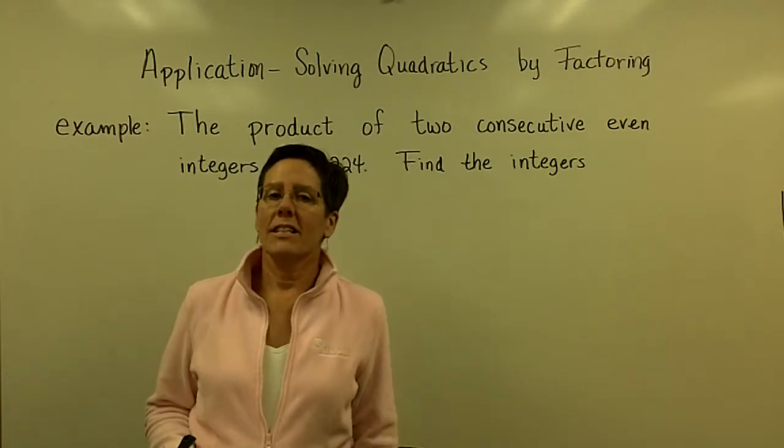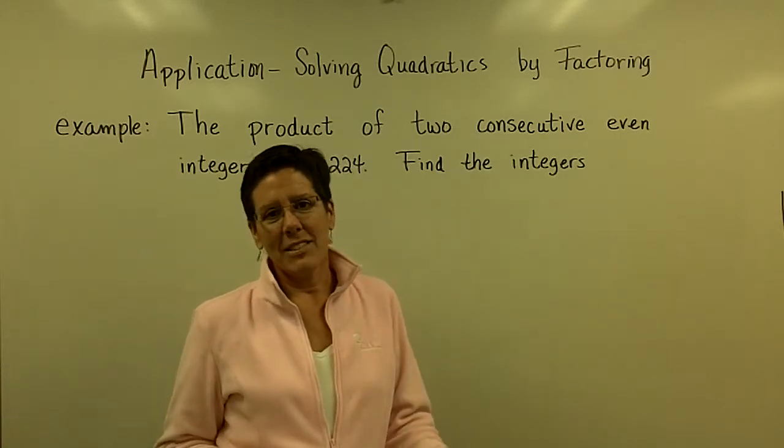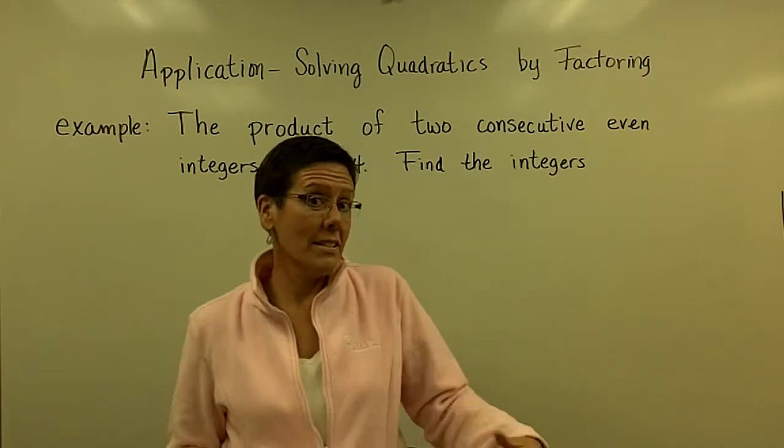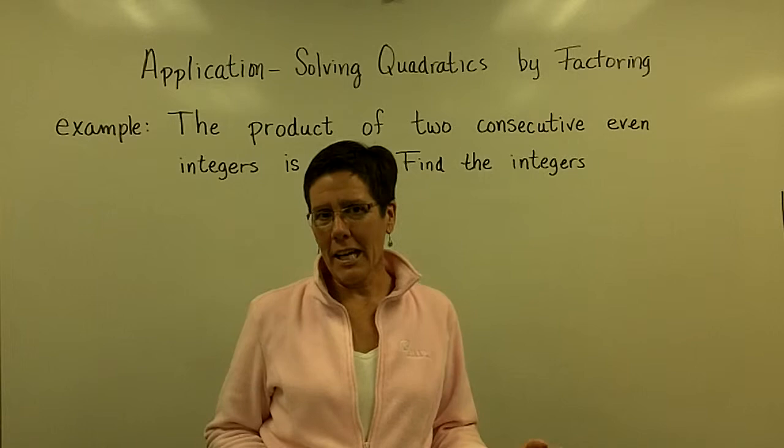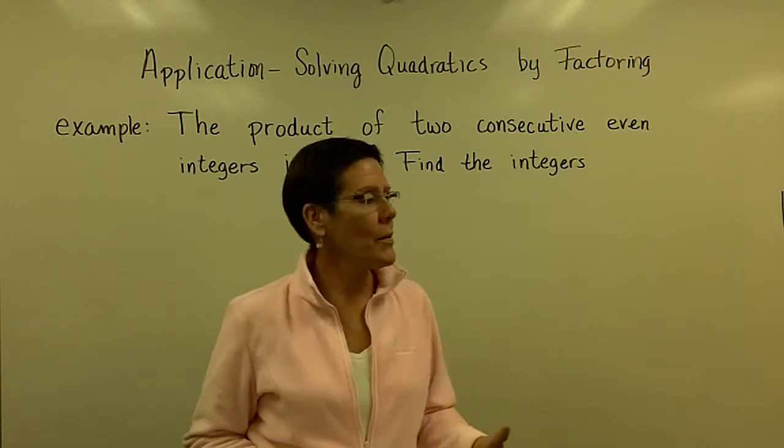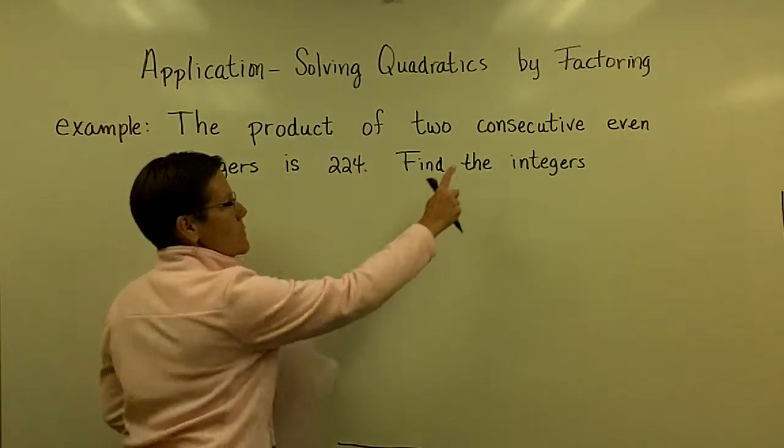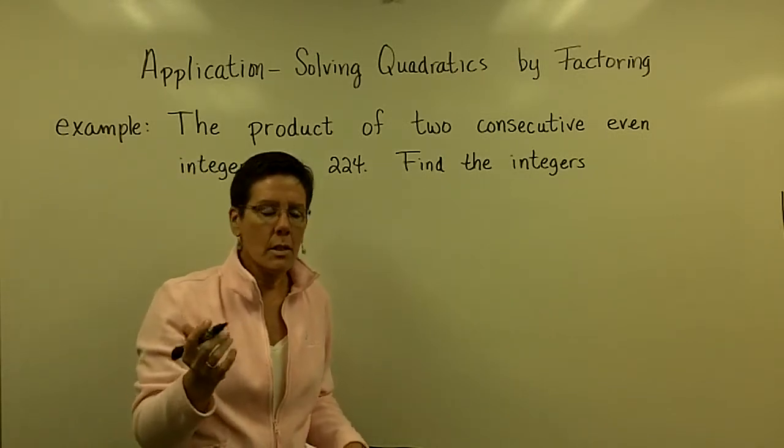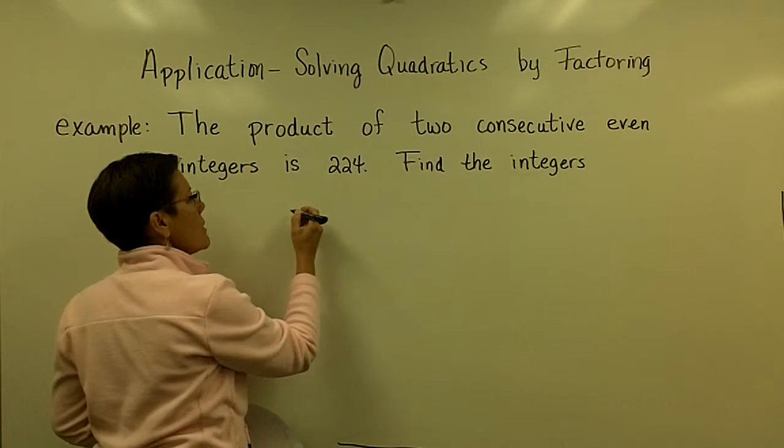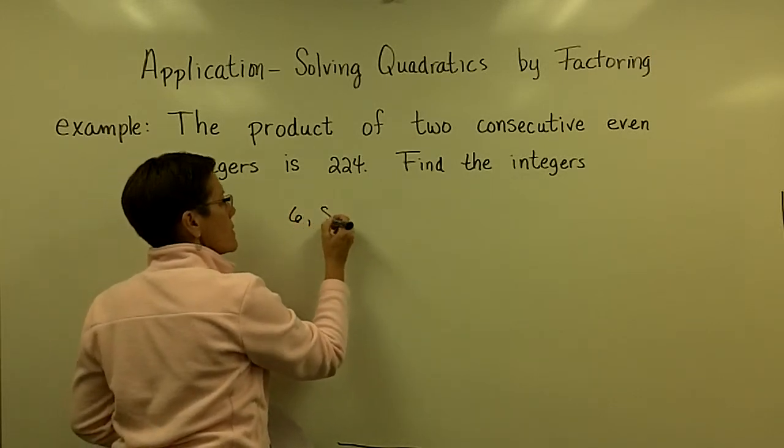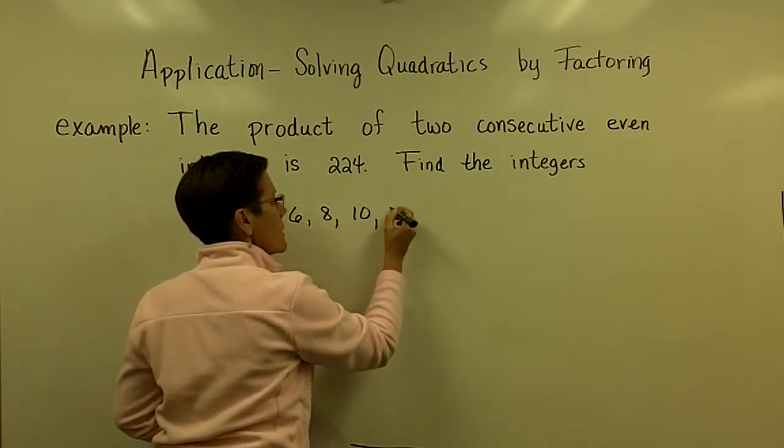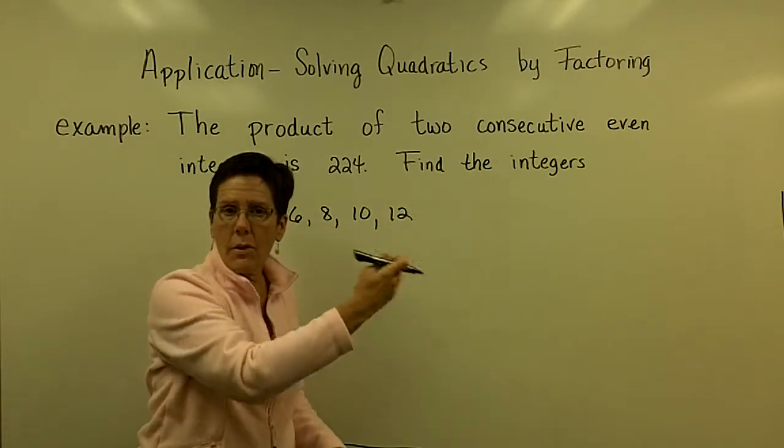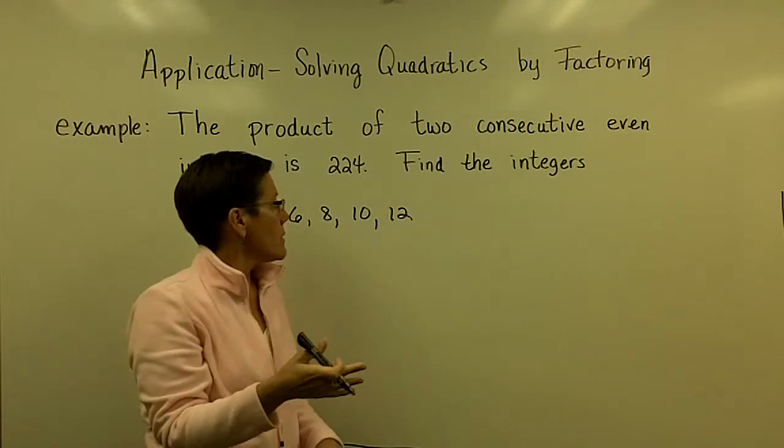So, consecutive even integers. Lots of algebra problems involve consecutive even integers, consecutive odd integers, just consecutive integers. We've got to kind of discern what that's all about. In this case, we have consecutive even integers. Let's just throw out some numbers. First of all, consecutive even integers would be something like 6 and 8 and 10 and 12. Those are all integers, and they're consecutive, they're in order, and they're even.